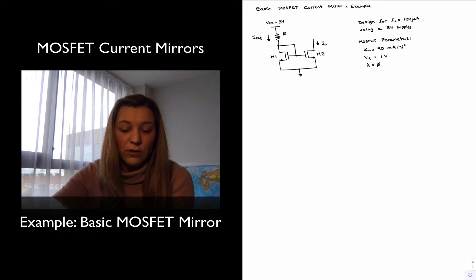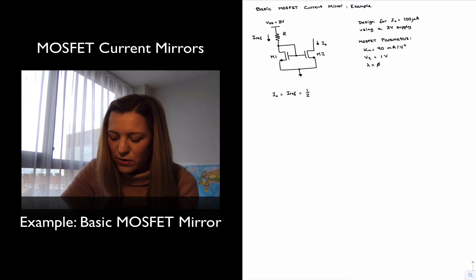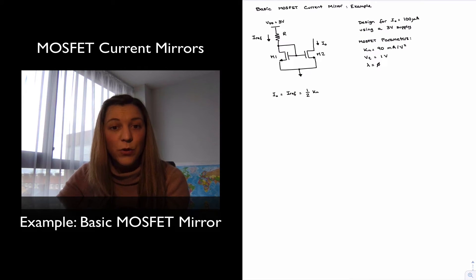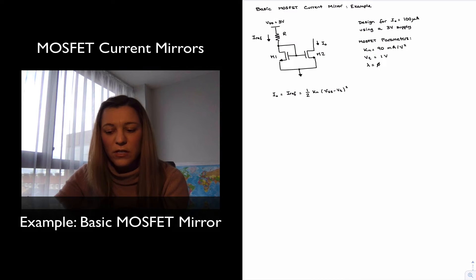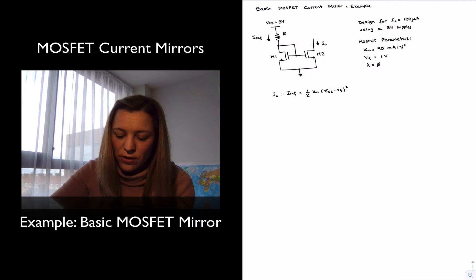So the way I will design this or select the value for R, I will just note that my output current I out, assuming there is sufficient value of VDS2, I out will be equal to IRF and I out will be in saturation. Which means that current will be equal to one half of KN. KN is mu n C ox times the aspect ratio W over L, times the overdrive voltage squared or VGS minus VT squared. And notice I'm not specifying VGS1 or 2 because both transistors have their gates and sources connected together. So I'm just calling it VGS.